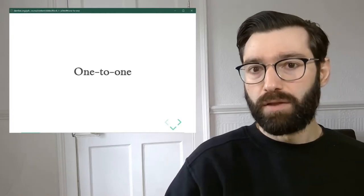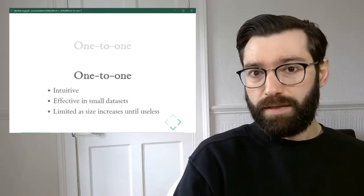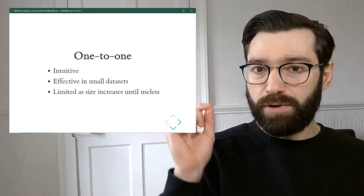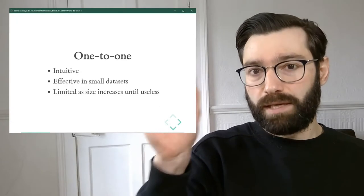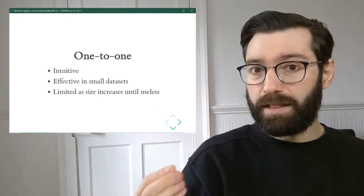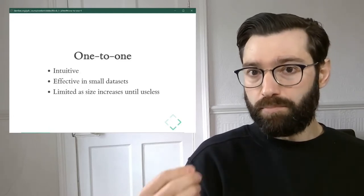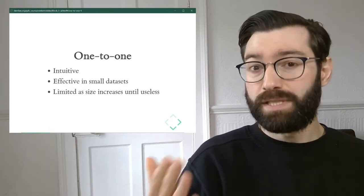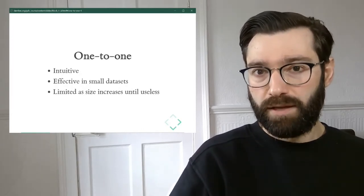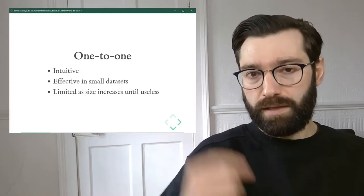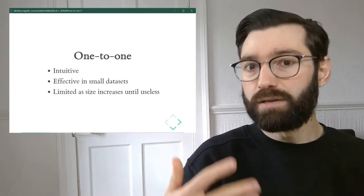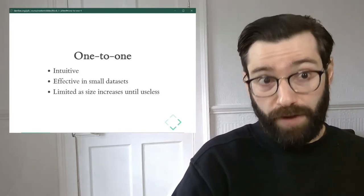The first one is what I call the one-to-one mapping. This is the most straightforward and fairly intuitive, because for every point in the dataset, we're drawing a single point on the screen or on the map. It's very effective in small datasets, mostly because it's intuitive — it's an easy-to-communicate idea on how you are displaying a point dataset. For every row in your dataset, you have a point in your map. It's a one-to-one mapping that is easy to understand and very effective.